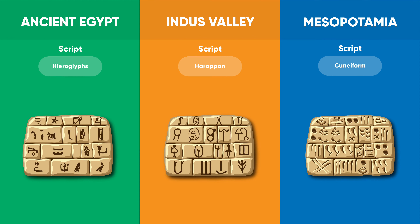A hieroglyph is a character used in a system of pictorial writing, particularly that form used on ancient Egyptian monuments. Hieroglyphic symbols may represent the objects that they depict, but usually stand for particular sounds or groups of sounds. The Harappan script is regarded as pictographic since its signs represent birds, fish, and a variety of human forms.